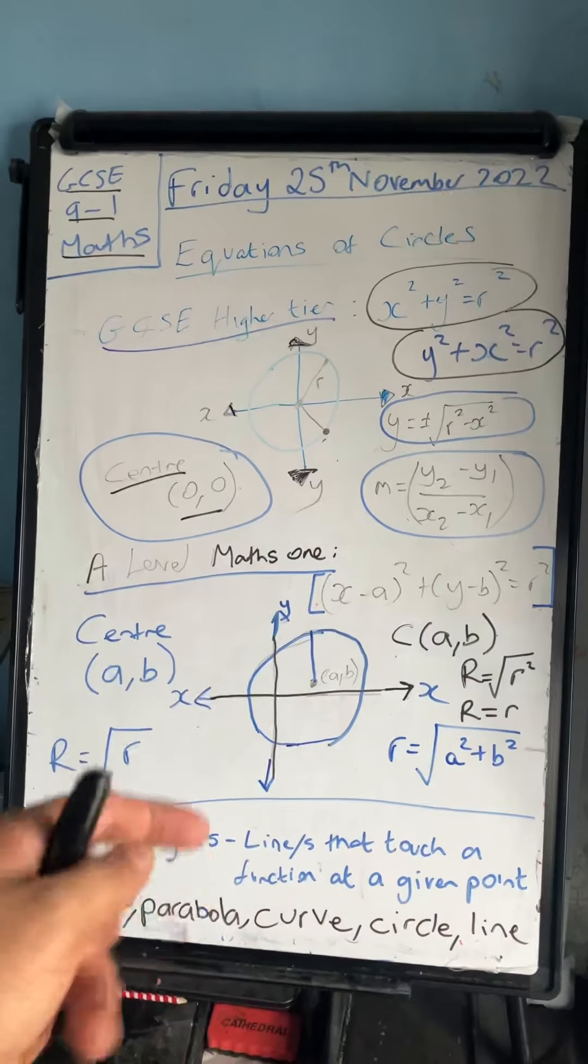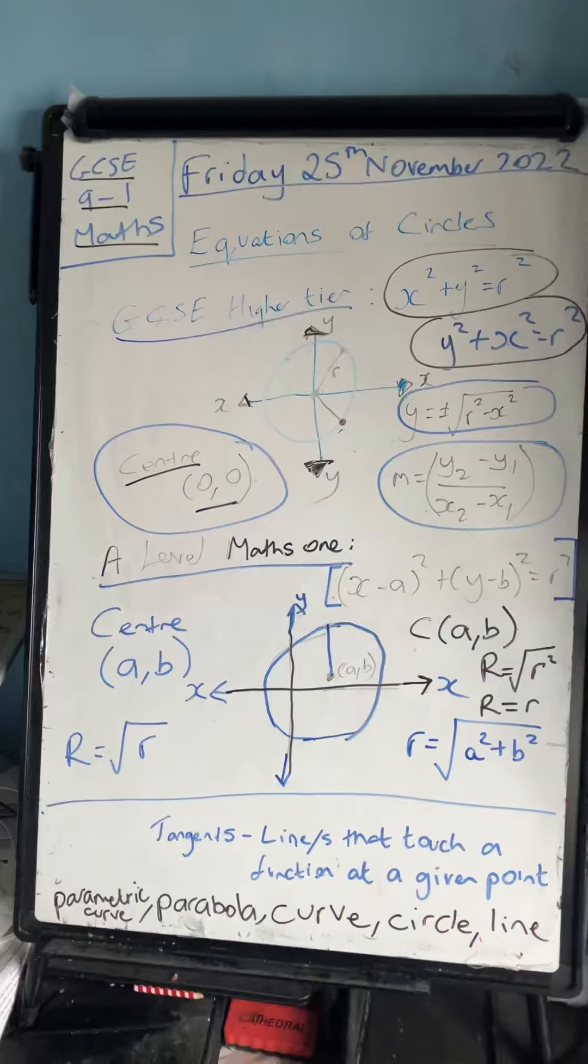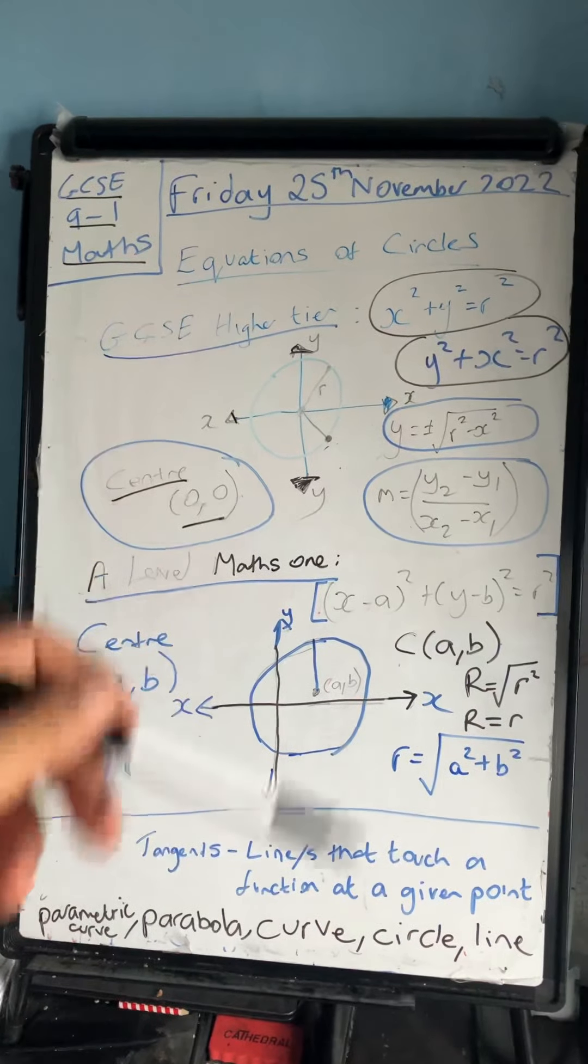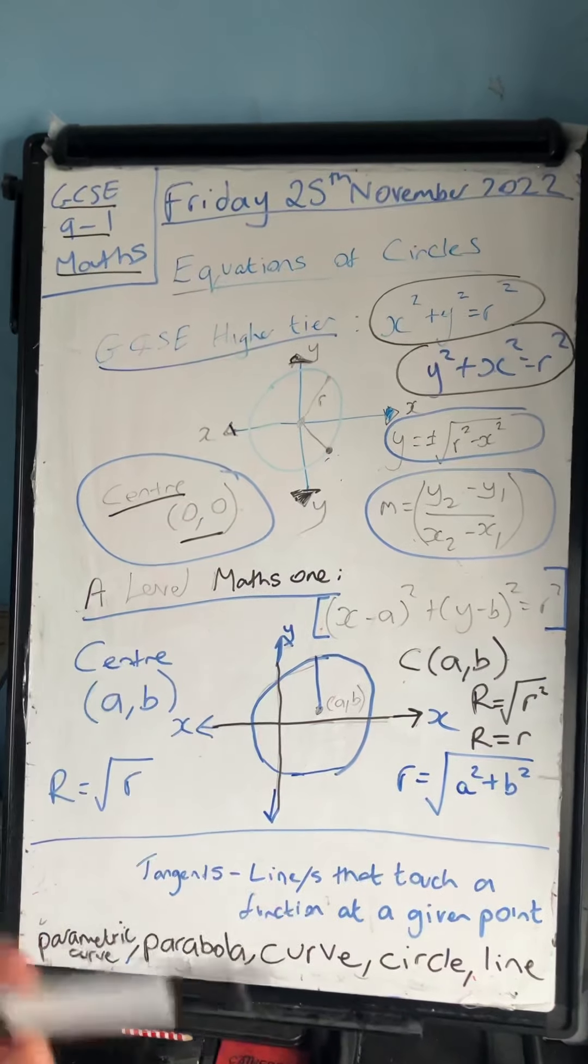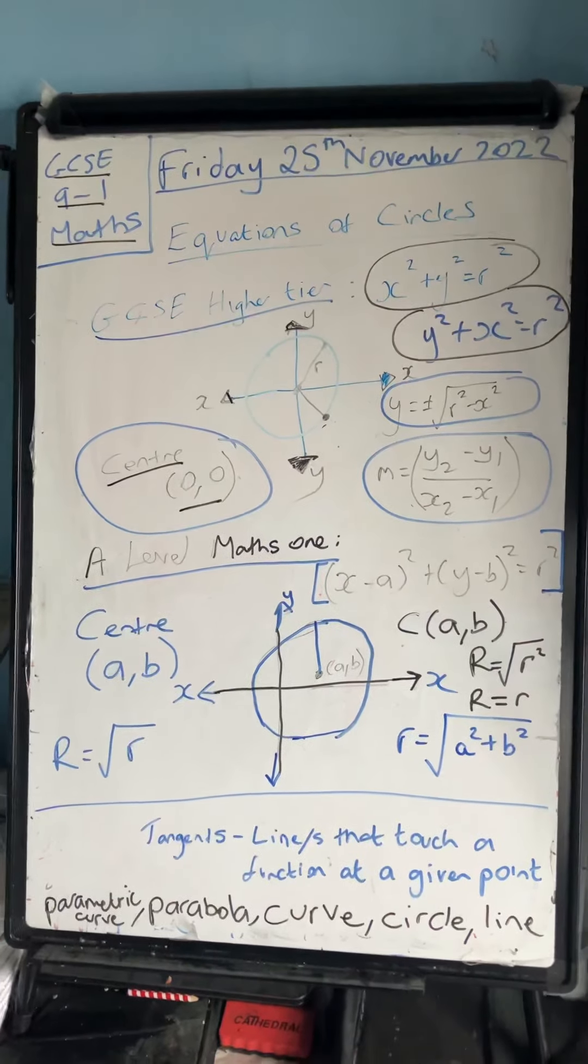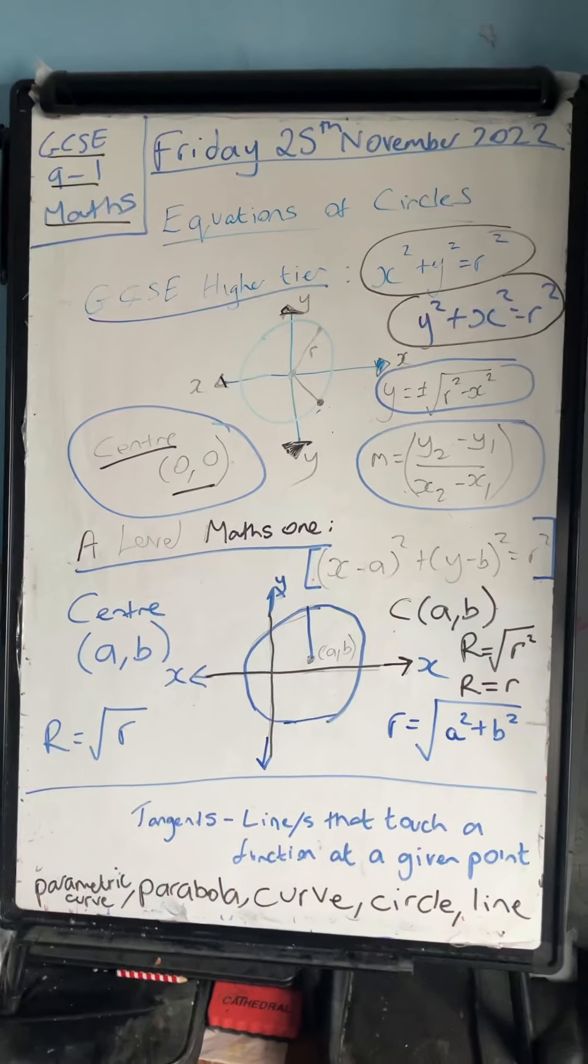The gradient of the tangent is the perpendicular, so it's a negative reciprocal of the current gradient. The equation of a tangent will involve a perpendicular gradient, so the negative reciprocal of a gradient. I will cover this in the future.